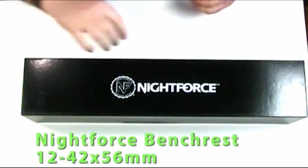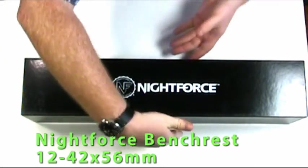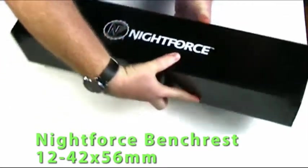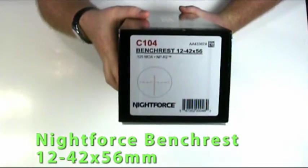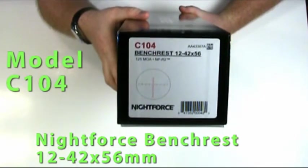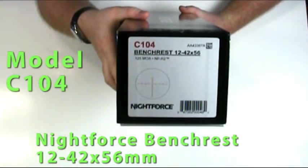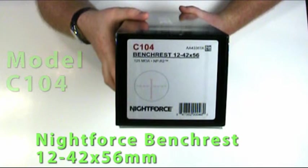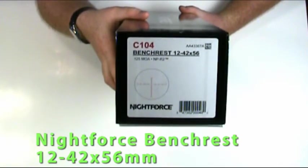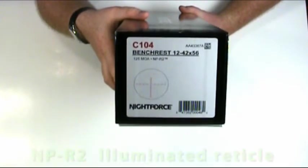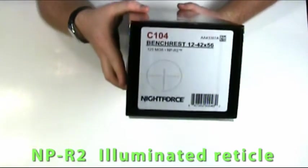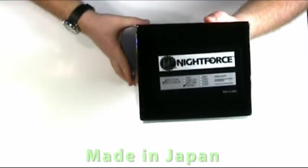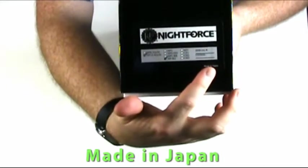It comes in a very large but basic box. This is a Night Force model C-104, a bench rest 12-42 power with a 56mm objective and the NPR2 illuminated reticle. On the other side of the box, very hard to see, but it says made in Japan.